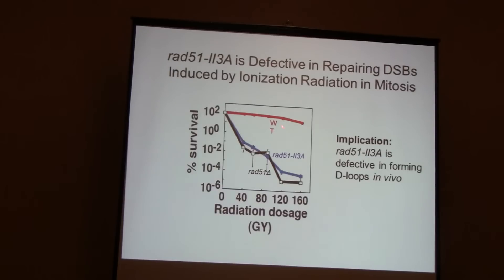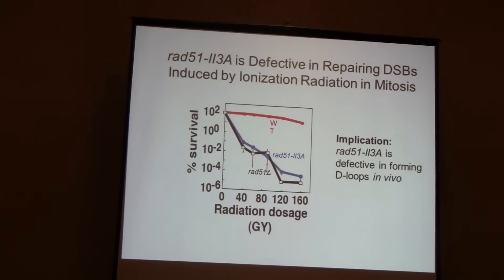Rad51 stands for radiation resistance — it was initially identified because it makes yeast very sensitive to ionizing radiation, since ionizing radiation creates double strand breaks that the recombination pathway fixes. Wild-type yeast cells are very resistant; the null mutant is very sensitive. Our 23a mutant is basically indistinguishable from the null — it is not capable of repairing mitotic double strand breaks, consistent with the D-loop assay showing no residual activity.